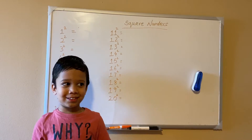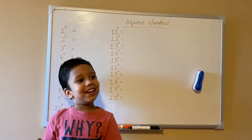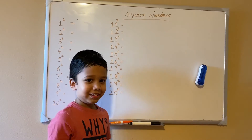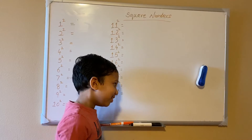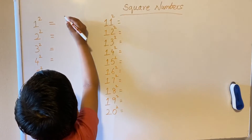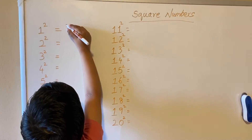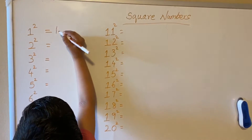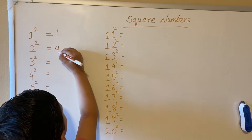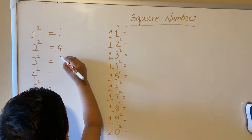Hi, I'm going to do squares. One square is one. Two square is four.